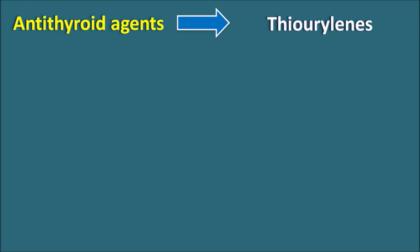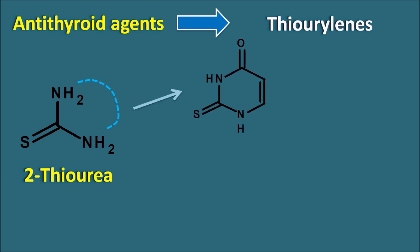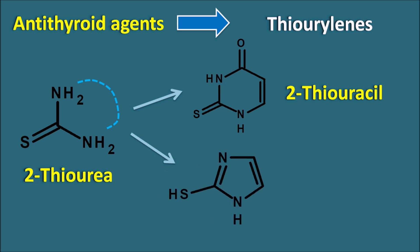What are the thiourelians? The thiourea structure can be modified by closing the ring either with a five-membered or six-membered ring system to produce thiourelians. One type of drug has the thiourea closed with a six-membered ring system, giving a uracil-like structure — this is called 2-thiouracil. The second type has the thiourea closed as a five-membered ring system containing an imidazole nucleus — this is called 2-thioimidazole.